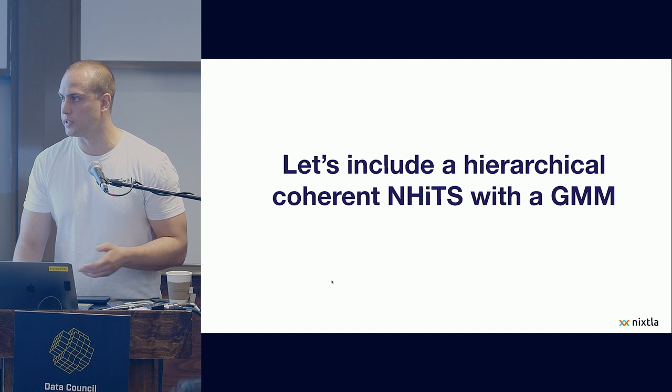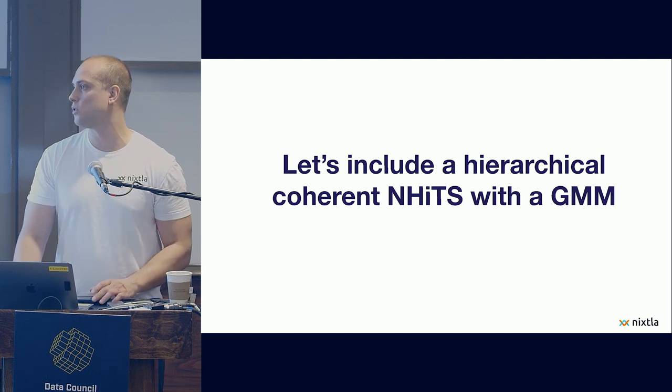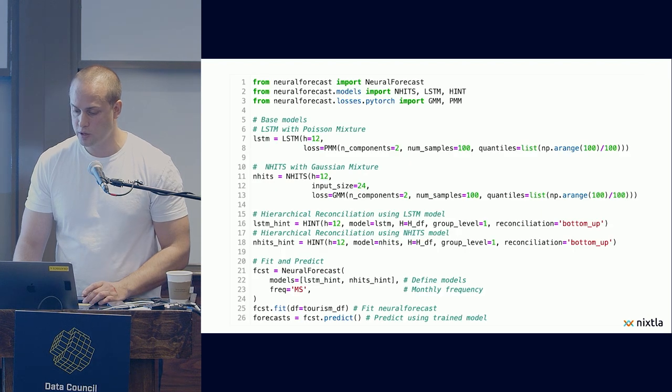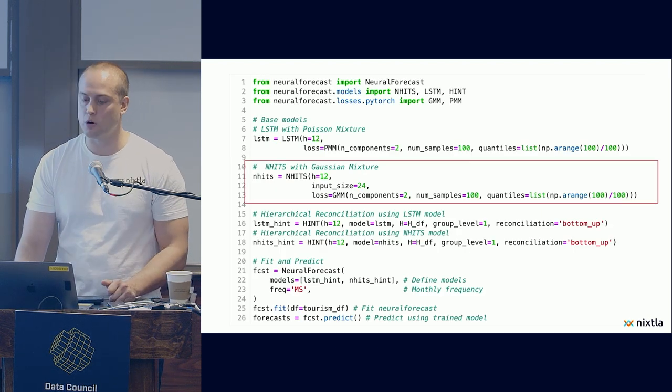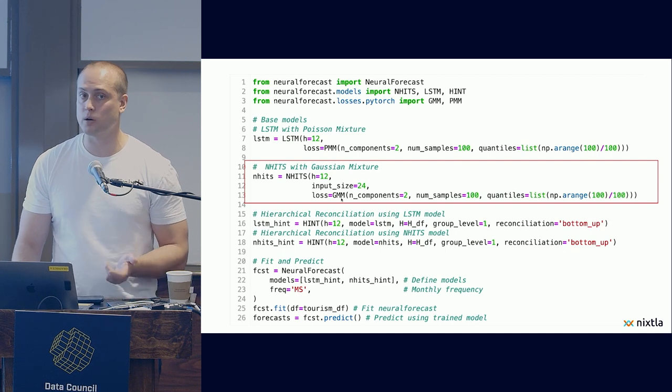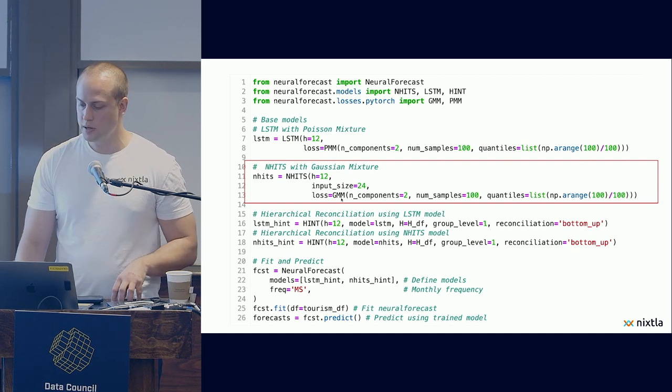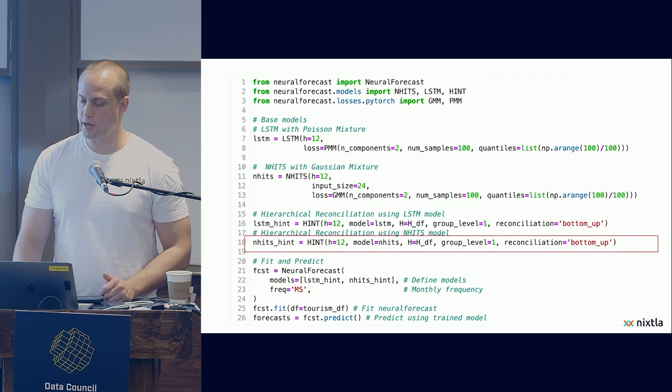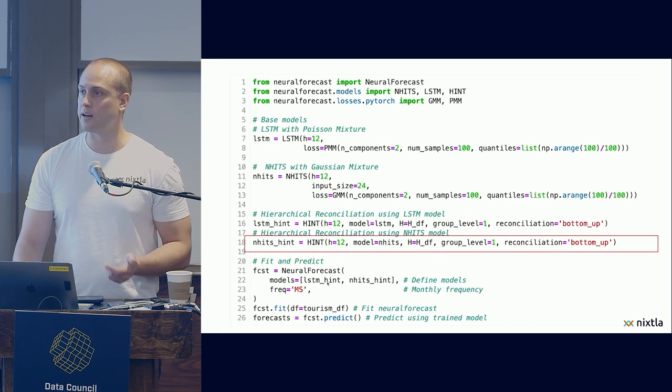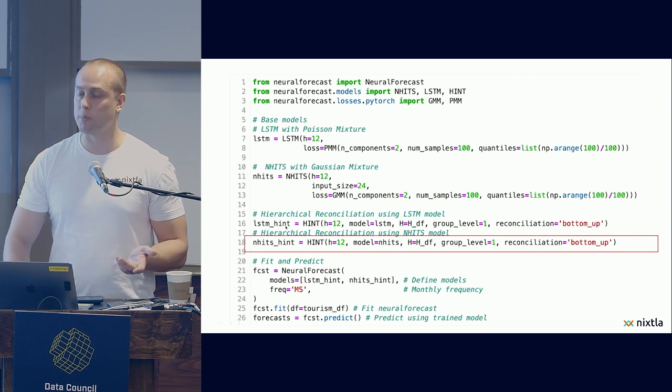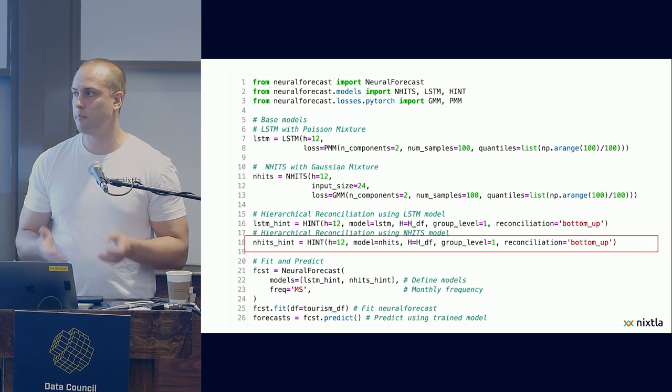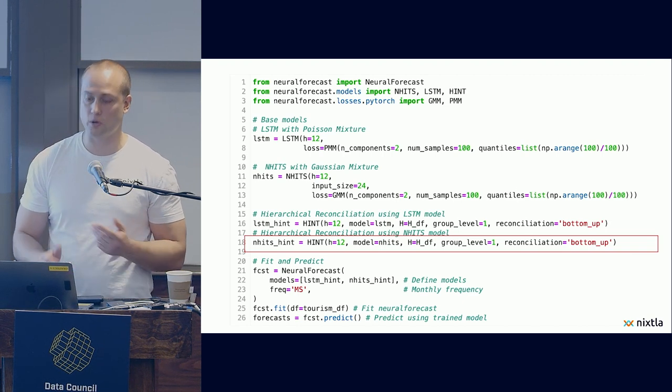And we're using a bottom-up reconciliation strategy. After that, it's really just the same. We pass the data when we instantiate the neural forecast class and call the dot fit and dot predict models. What if we wanted to include another model? Let's say a neural hierarchical interpolation model that is one of the things that we created and have gotten great results. Well, you just need to do the same. You call the model. In this case, we're instantiating the model with a Gaussian mixture mesh loss. And everything else is really the same. We just pass the list of models here and we can create in a couple lines of code, we can train two important deep learning models that are, by construction, hierarchically coherent.